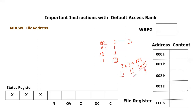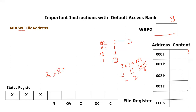This is the key fact to understand. In this instruction, we are multiplying the working register with the file register. The working register is eight bits, and the file register location is also eight bits. So when you multiply an eight-bit number with another eight-bit number, the result can be up to 16 bits.